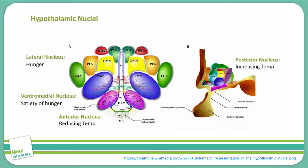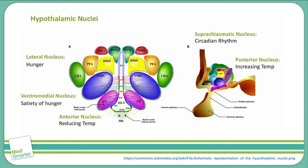Next is the suprachiasmatic nucleus. This nucleus gets its name — suprachiasmatic — for being located above, or superior to, the optic chiasm. This nucleus is responsible for maintaining our circadian rhythm, or sleep-wake cycle. Patients with lesions involving this nucleus will have difficulty regulating their sleep cycles and may experience symptoms like insomnia or excessive sleepiness at inappropriate times during the day. You should remember that these are nonspecific symptoms and that you'll probably have to rule out more common abnormalities, for example depression or hypothyroidism, before suspecting that a brain lesion is involved.